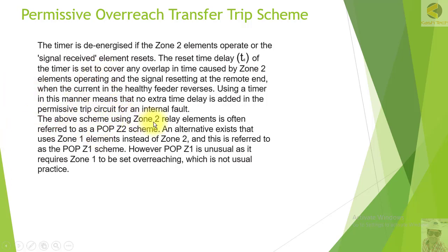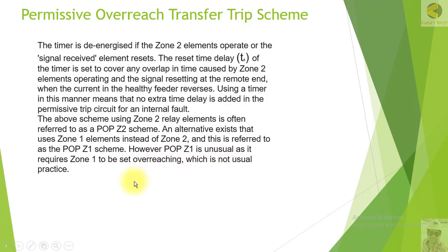The above scheme using the zone 2 relay element is often referred to as POP zone 2 scheme. An alternative uses the zone 1 element instead of zone 2 and is referred to as POP zone 1 scheme. However, POP zone 1 is unusual as it requires zone 1 to be set overreaching, which is not usual practice.